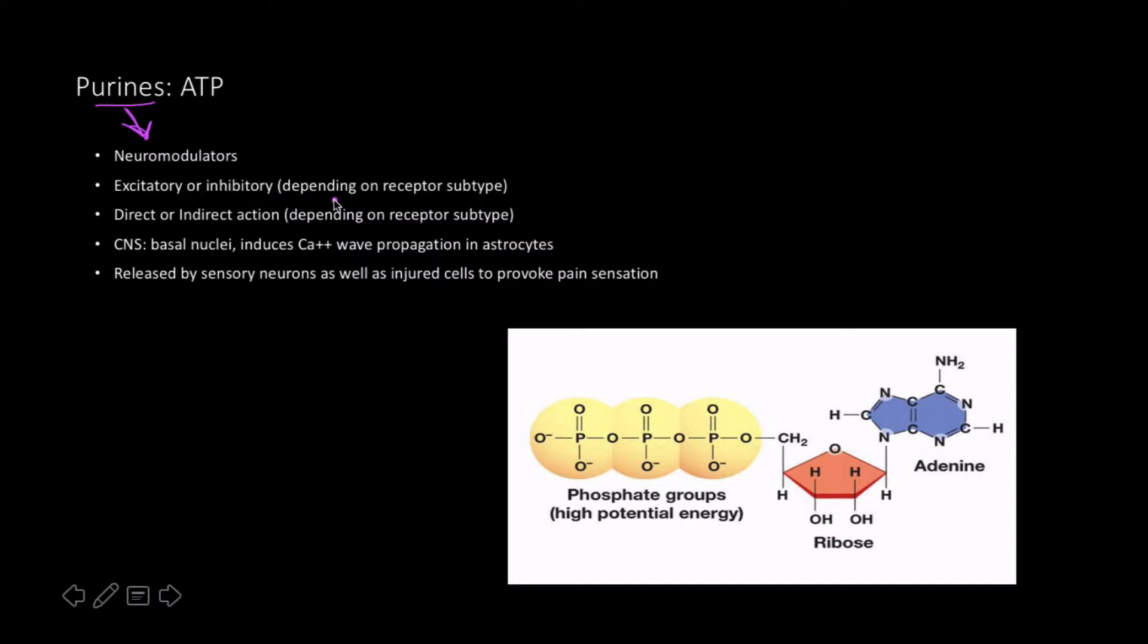That's kind of weird to me. ATP can be either excitatory or inhibitory depending on the receptor subtype. I imagine there's a lot of things that can bind to ATP. It has direct or indirect action also depending on the receptor subtype.